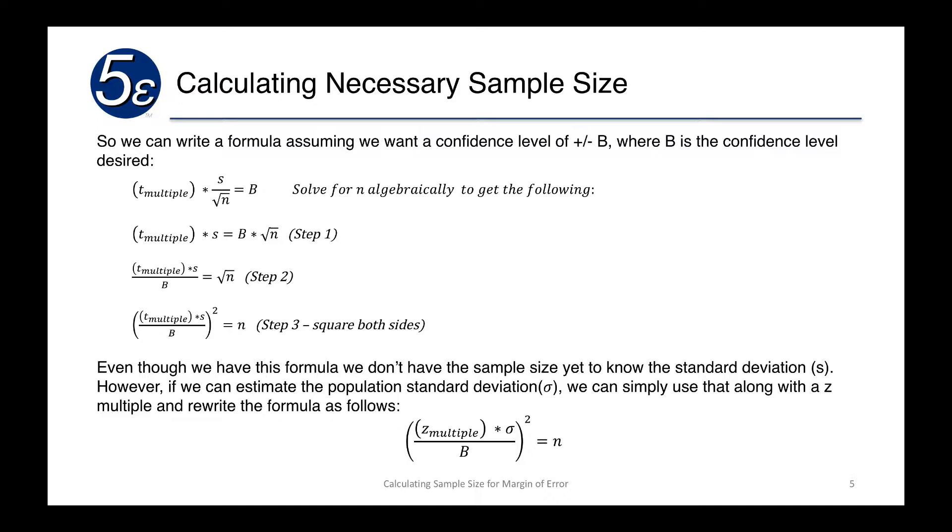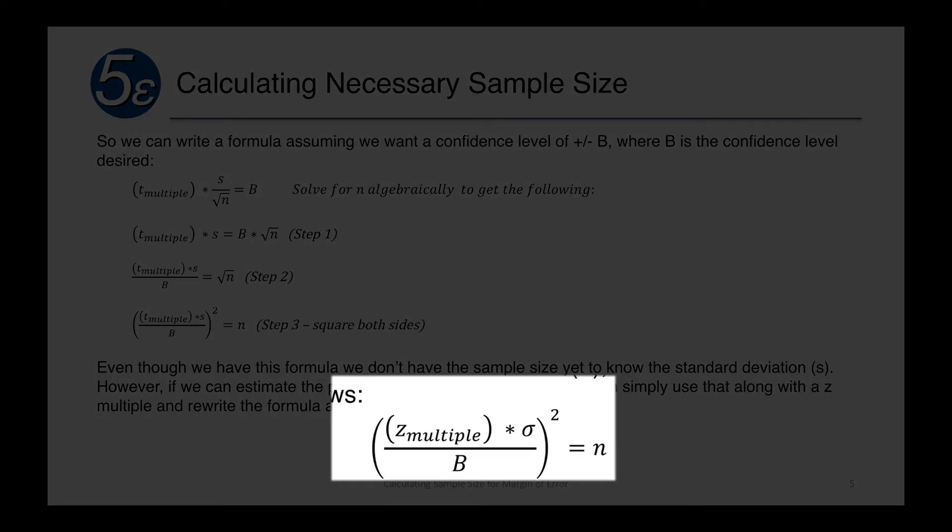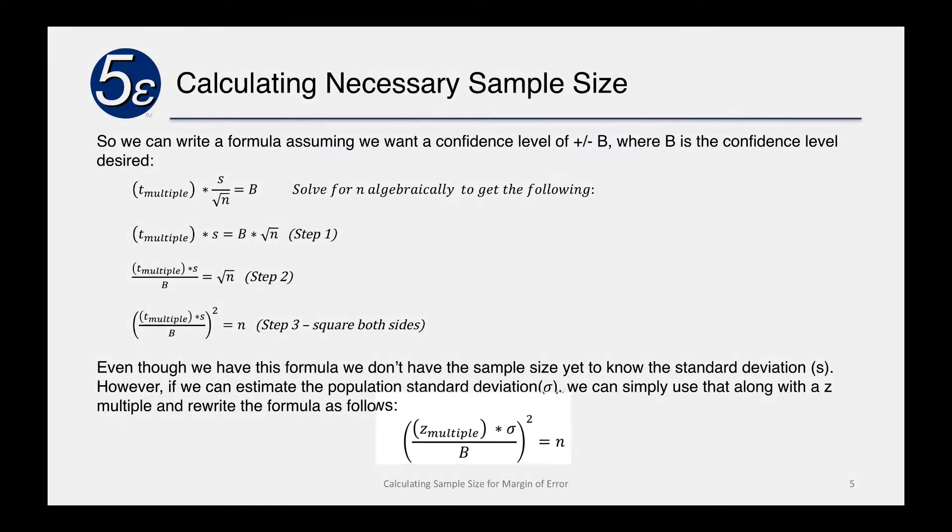And recall that if we have the population standard deviation, we can use the z multiple because we don't have that extra variability that gets introduced if we have a sample standard deviation. So we can then rewrite the formula as follows using the z multiple and the population standard deviation that we are given.